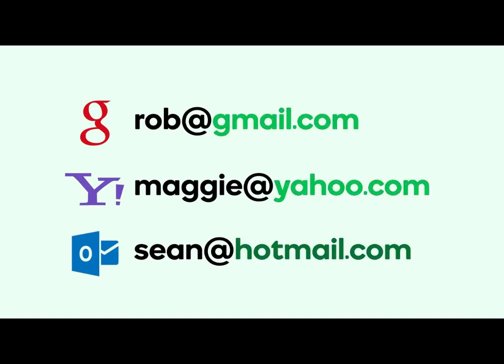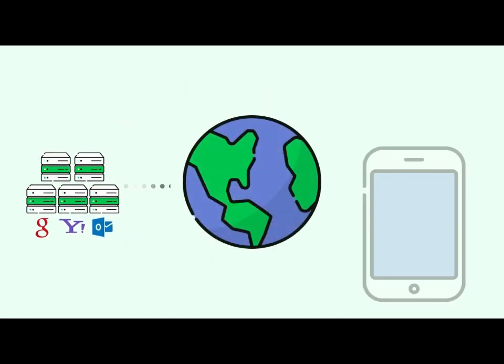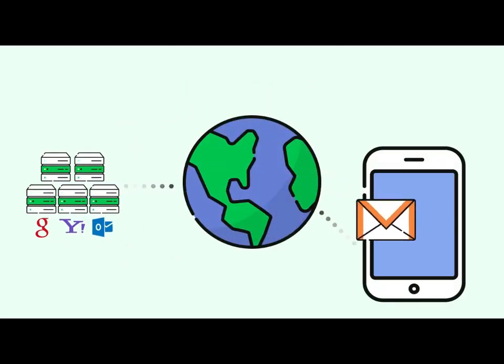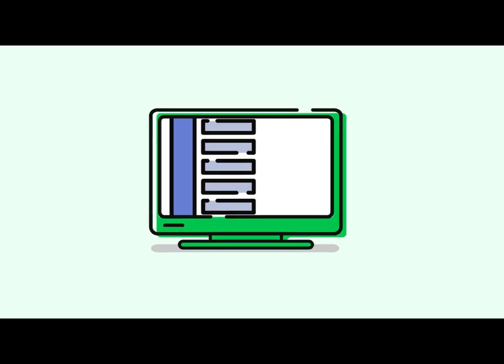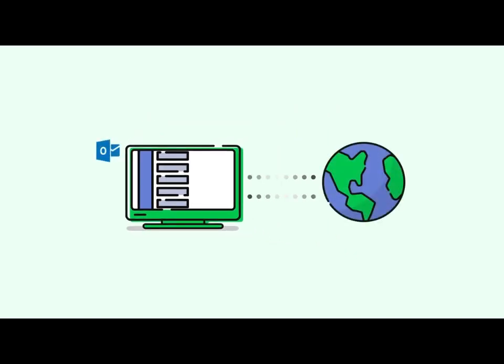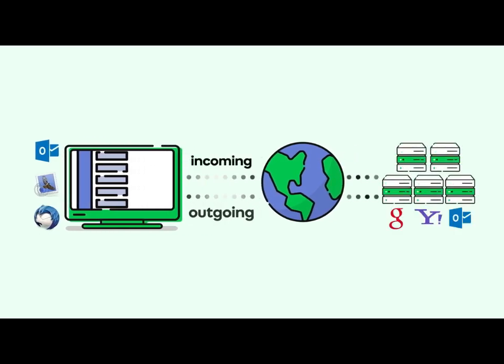When you use a free email provider, your email address uses their domain name and in turn, they allow you to use their email servers. If you use their webmail site to read and send email, they handle the email server settings that direct your incoming and outgoing emails. However, if you want to use a local email client like MS Outlook, Apple Mail, or Mozilla Thunderbird, you'll need to enter your email provider's incoming and outgoing mail server settings when you set up your client.